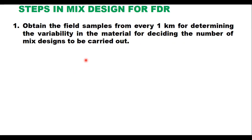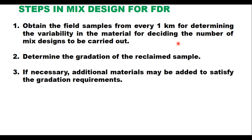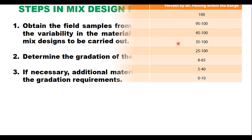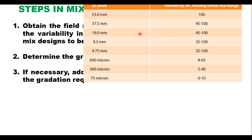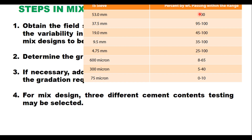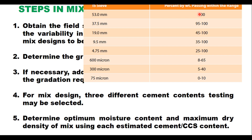Mix design for FDR involves several steps. The first step is to obtain field samples from every one kilometer to determine variability in the material and decide the number of mix designs to be carried out. Second, determine the gradation of the reclaimed sample, and if necessary, additional materials will be added to satisfy the gradation requirement. The maximum size of aggregate should be 53 millimeters and must conform to the specified grading. For mix design, three different cement contents are selected as trial values.